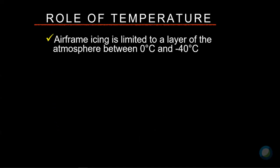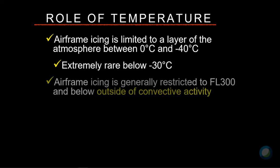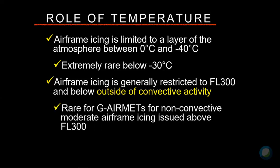Airframe icing is limited to the layer of the atmosphere between zero degrees Celsius and minus 40 Celsius, though it's extremely rare below about minus 30. Environment Canada in an instrumented airplane found supercooled liquid water down to minus 37.5 degrees Celsius — in a thunderstorm. In the big picture, airframe ice is really restricted to flight level 300, or 30,000 feet, or below outside of any convective activity. It's actually rare to see a graphical AIRMET for non-convective moderate airframe ice issued above that.